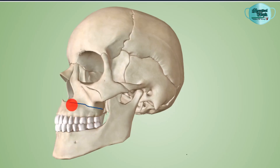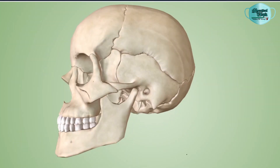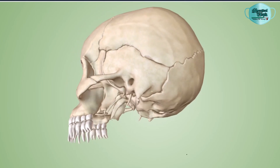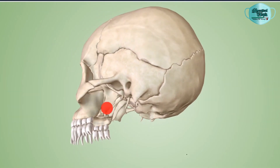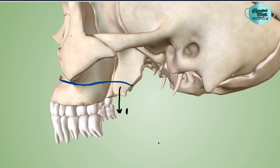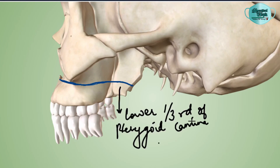Here you see the fracture line extending backwards. For visualization we will hide the mandibular bone and turn the skull posteriorly. This is the pterygoid lamina, and the fracture line will extend up till the lower one-third of the pterygoid lamina, thereby separating the alveolar segment at this level. The fracture line extends from the lateral margin of the anterior nasal aperture, moving backwards below the zygomatic buttress and reaching up till the lower one-third of the pterygoid lamina.